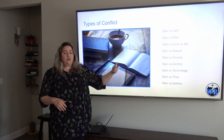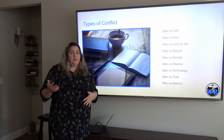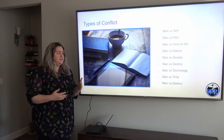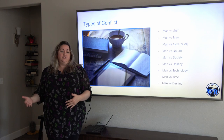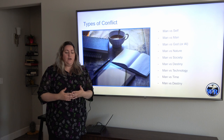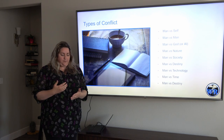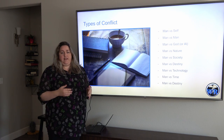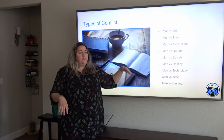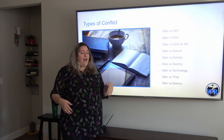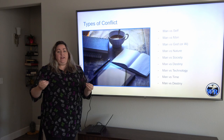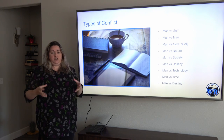Then you have man versus nature. One example of this would be Lord of the Flies — that's man versus human nature. But then you also have man versus nature itself, trying to survive the elements. The middle grade book Hatchet is a good example of man versus nature. Then you have man versus society. A lot of your dystopian books fall in that category. They are fighting against the society itself and trying to take the society structure down.